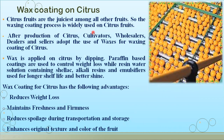Now we will see wax coating on citrus. Citrus fruits are the juiciest among all other fruits, so wax coating is widely used on them. After production, citrus cultivators, wholesalers, dealers, and sellers adopt the use of different waxes. Wax is applied on citrus only by dipping. Paraffin-based coatings are used to control weight loss, while resin-water solutions containing shellac, alkali resin, and emulsifiers are used for longer shelf life and better shine. Advantages include reducing weight loss, maintaining freshness and firmness, reducing spoilage during transportation and storage, and enhancing the overall texture and color of the fruit.